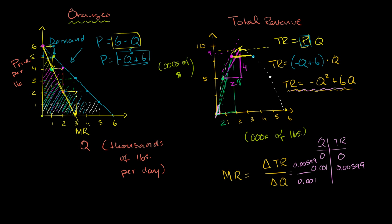With a monopolist, things do change because we are the only producer in the market. The price at which we can sell changes depending on how much we produce, because we are the entire supply for the market. And so we have this downward-sloping marginal revenue curve.